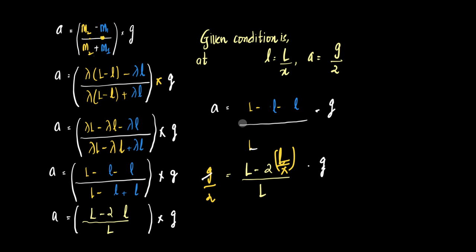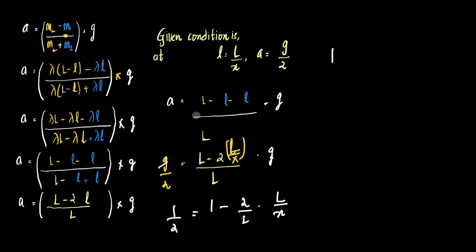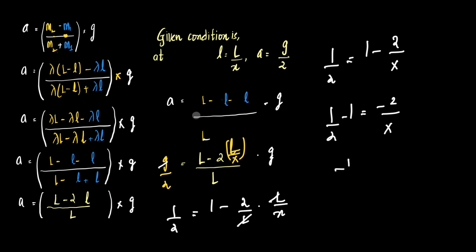Given the condition that l equals L divided by x, substituting l equals L/x into the expression: a equals g times (L minus 2L/x) divided by L, which simplifies to g times (1 minus 2/x). Setting a equal to g/2 and cancelling g from both sides gives 1/2 equals 1 minus 2/x. Therefore 1/2 minus 1 equals minus 2/x, which gives minus 1/2 equals minus 2/x, and therefore x equals 4.